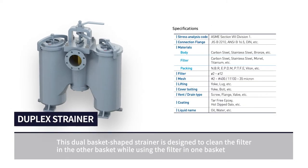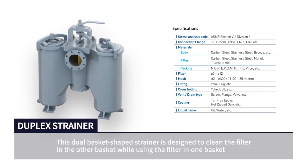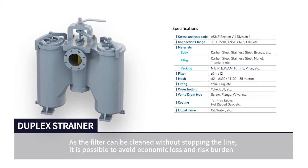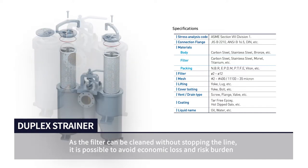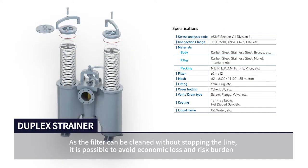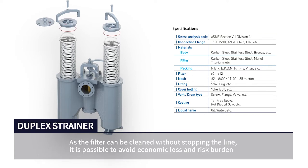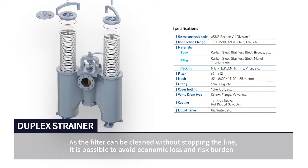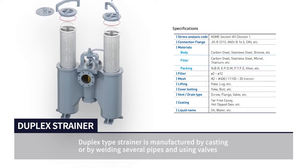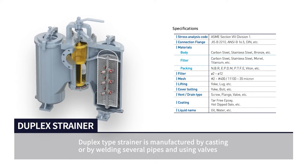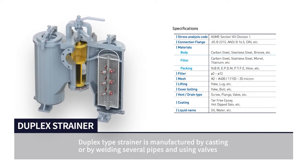This dual basket shaped strainer is designed to clean the filter in one basket while using the filter in the other. As the filter can be cleaned without stopping the line, it is possible to avoid economic loss and risk burden. Duplex type strainer is manufactured by casting or by welding several pipes and using valves.